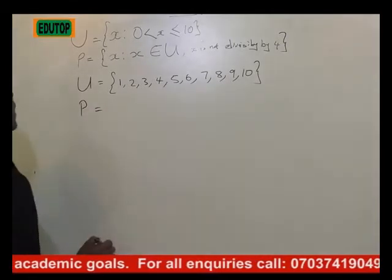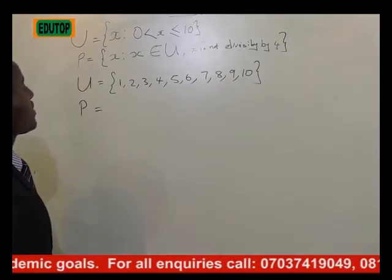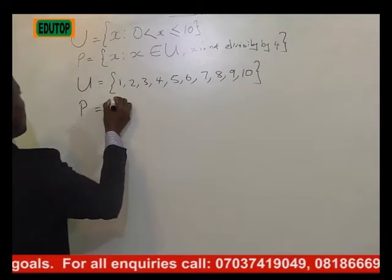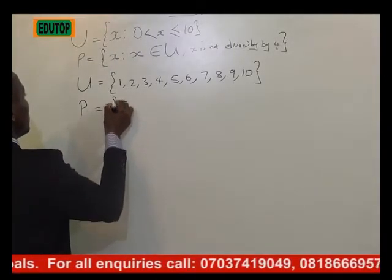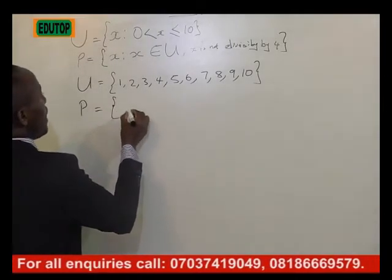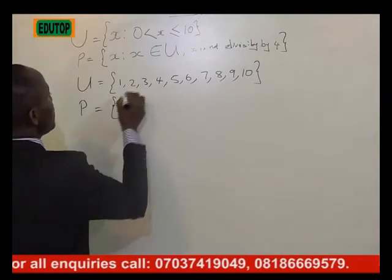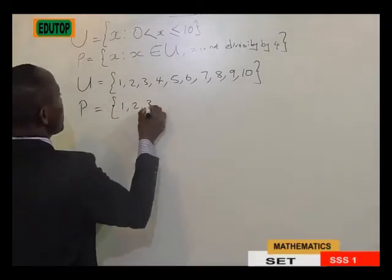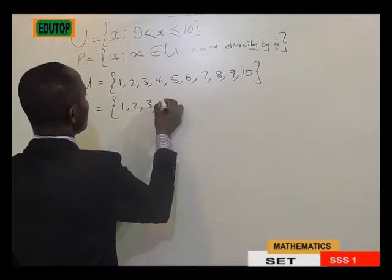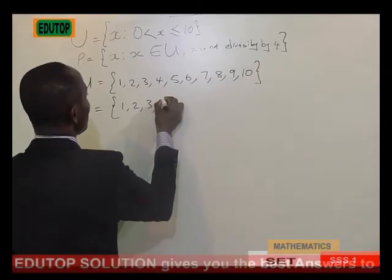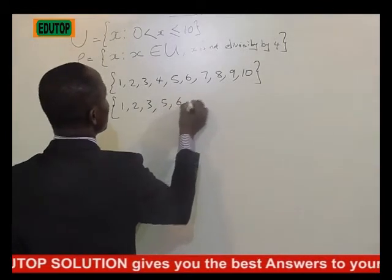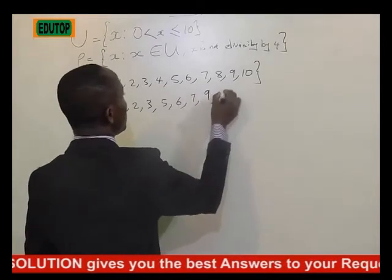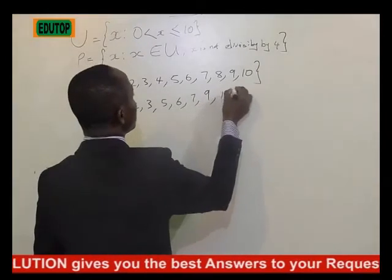P is defined as x not divisible by 4. The elements of P that are not divisible by 4 are 1, 2, 3 — 4 is divisible by 4 — then 5, 6, 7, 9, and 10.